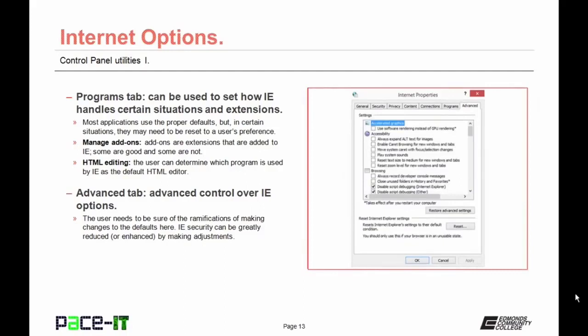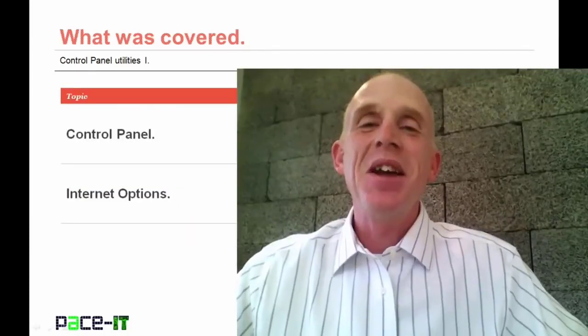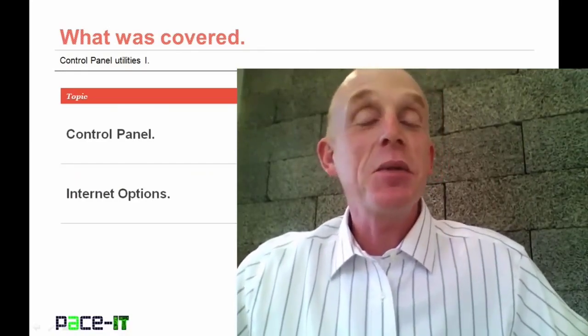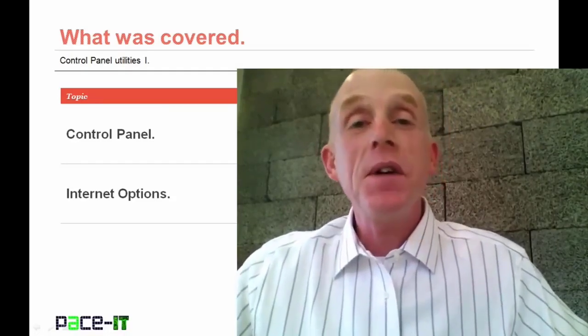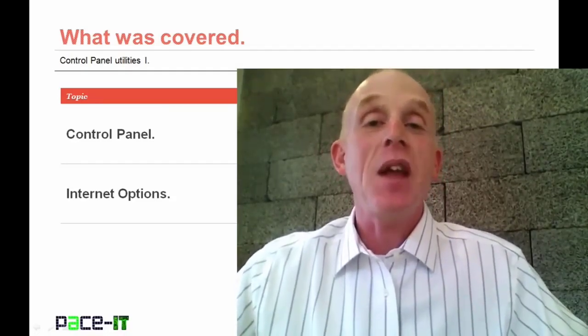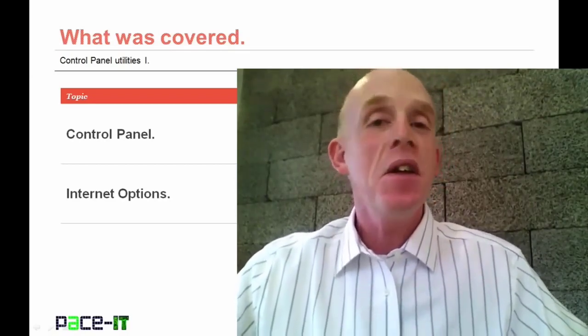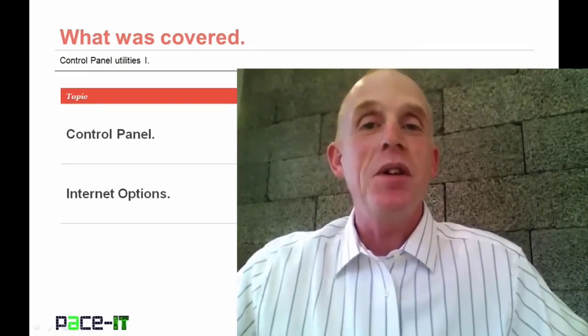The Advanced tab allows advanced control over Internet Explorer options. You need to be sure of the ramifications before changing defaults here, as Internet Explorer security can be greatly reduced or enhanced by making adjustments. That concludes this session on control panel utilities. We briefly discussed what the control panel is and then went into a fairly in-depth discussion on the Internet Options applet. On behalf of Pace IT, thank you for watching this session.